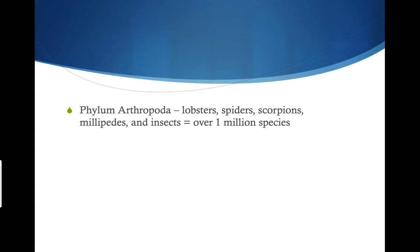First of all, the phylum Arthropoda. This is a phylum, or a subcategory, of the animal kingdom, which is what we're talking about right now. Some examples: lobsters, spiders, scorpions, millipedes, and all insects. There are over a million species of the phylum Arthropoda.